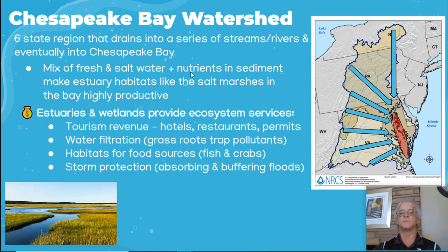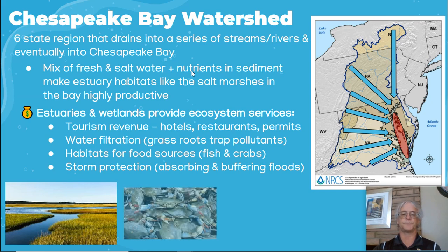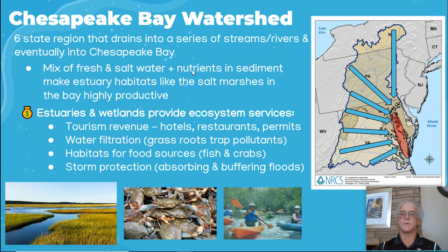Estuaries and wetlands provide ecosystem services, for example tourism — hotels, restaurants, and permits to go swimming or fishing. Water infiltration in the grassroots on the edges of the watershed traps pollutants. They provide habitats for food sources: fish, crabs, shellfish. And storm protection — they buffer storms from causing problems along the seashore.